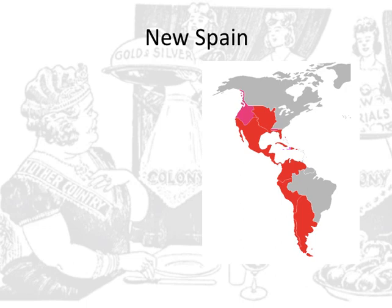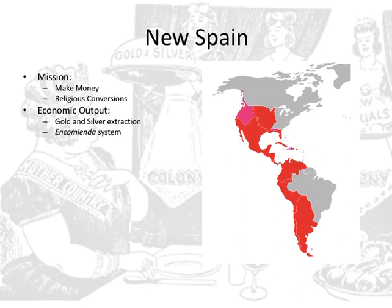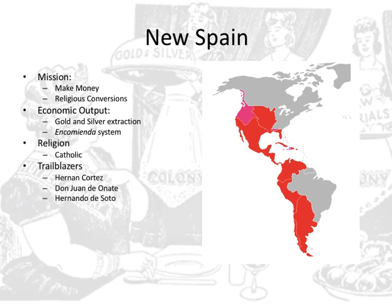Now we move to New Spain. New Spain's mission — no secret for those who took world history — was to make money and find religious converts. Their economic output was mostly gold and silver extraction. They also instituted more long-term commitments like the encomienda system, a deal between settlers and the king that allowed settlers to use native labor in exchange for converting those natives to Christianity. Their religion was staunchly Catholic. Trailblazers include Hernán Cortés, Don Juan de Oñate, and Hernando de Soto — the latter two explored and helped map out North America as opposed to modern-day Mexico.